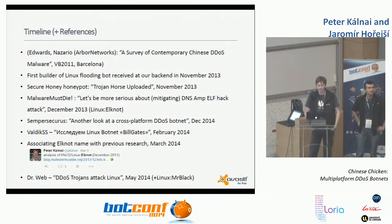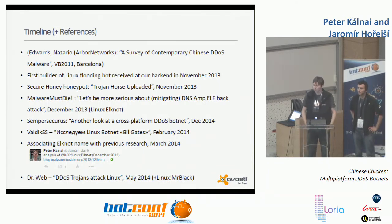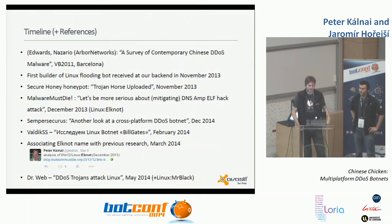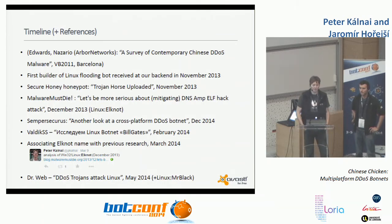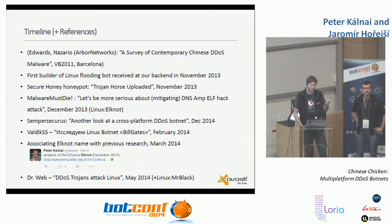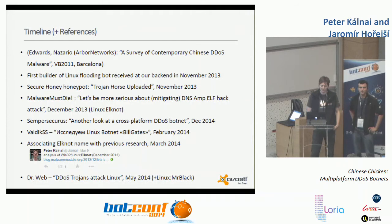Their story started in November 2013 when the first builder arrived on their backend that was able to produce Linux flooding bots — though they did not notice it at that time. In November 2013 articles appeared on the web referring to hacked web servers with these tools. In December 2013, Malware Must Die summarized those reports. In February 2014, security researcher Waldick SS first mentioned a bot with strings 'Bill and Gates' in the binary. In March 2014, this was referred to as the Elknot malware family — the first mention of Elknot on Twitter.